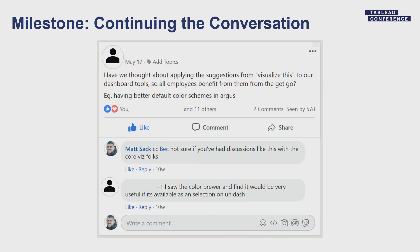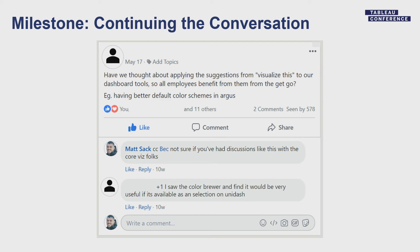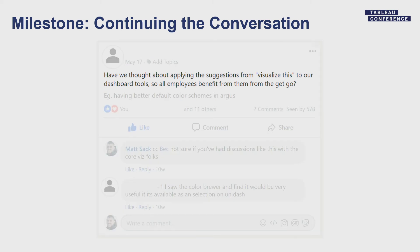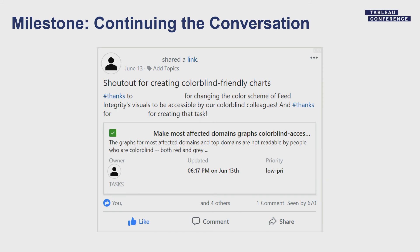After this issue got published, we saw a post from somebody asking: have we thought about applying the suggestions we pitch in Visualize This to our own tools, so all employees could benefit? And Visualize This is not just about Tableau — we cover lots of tools and build a number of tools internally. A couple weeks later, we saw a shout-out from somebody on the Feed Integrity team. An engineer on that team had submitted a code change to convert a graphic that was based on a red-green color scale to work with a colorblind colleague. It was incredible — but it was all spurred by the conversation we had started. It had jumped from something static on the wall to something with tangible impact.